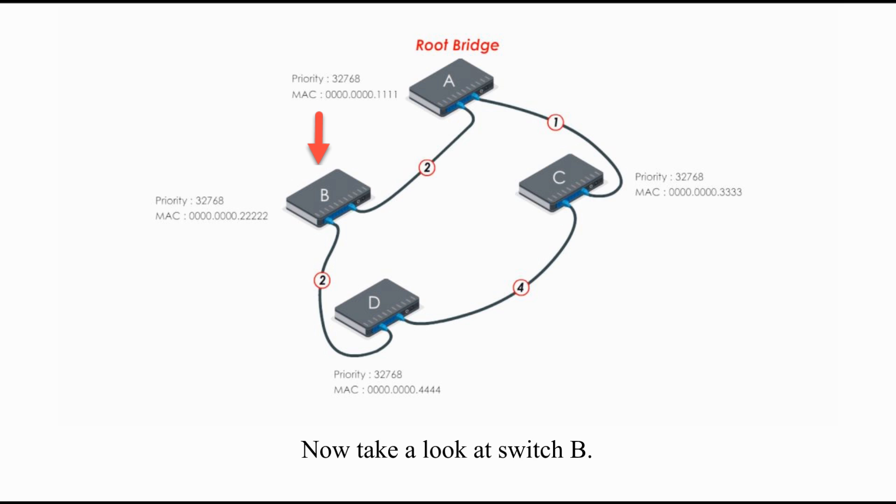Now, take a look at switch B. For switch B, there are two paths to reach root bridge: BDCA and BA. The path BDCA costs 7 and path BA costs 2. Therefore, the link BA is chosen as the path from switch B to root bridge A. This port is selected as a root port. A root port is the port with the least cost path to the root bridge. The other end is a designated port.